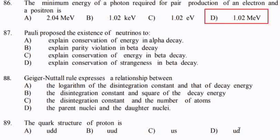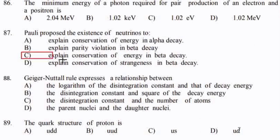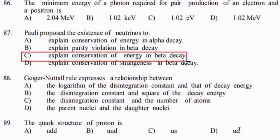Pauli proposed the existence of neutrinos to explain conservation of energy in beta decay. The answer is option C.